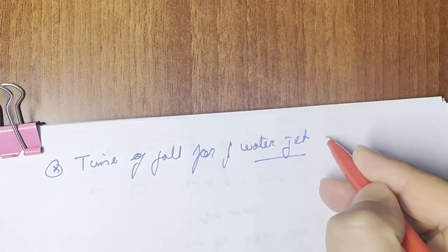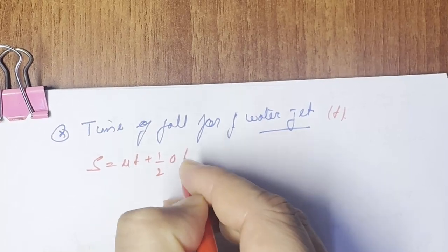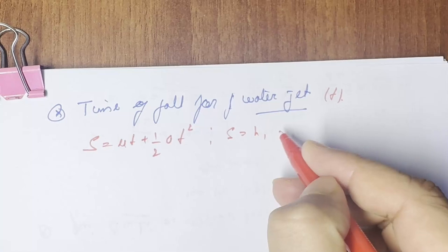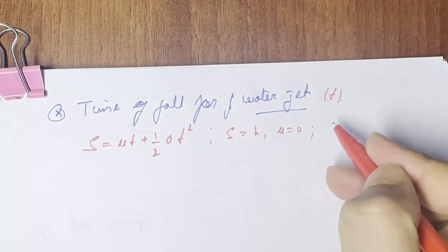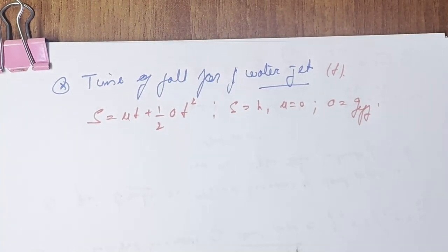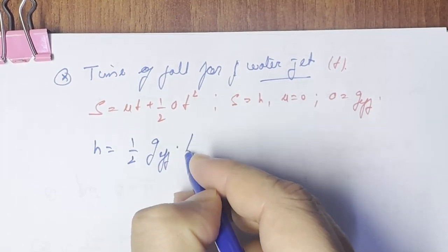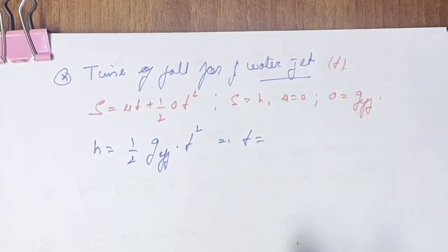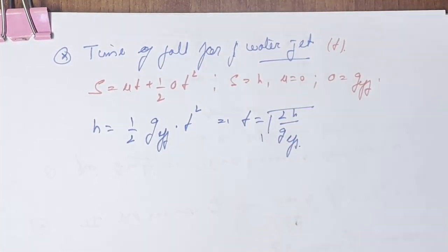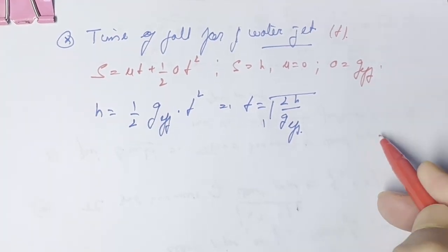Using s equals ut plus half at squared, where s equals h, initial velocity u equals 0, and a equals g_effective, we get h equals half times g_effective times t squared. Therefore, t equals square root of 2h divided by g_effective. The horizontal distance d equals v times t.